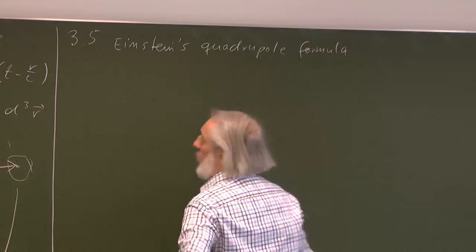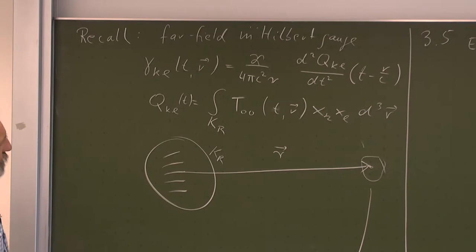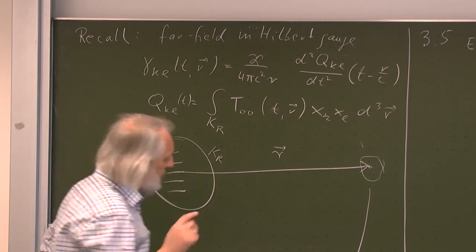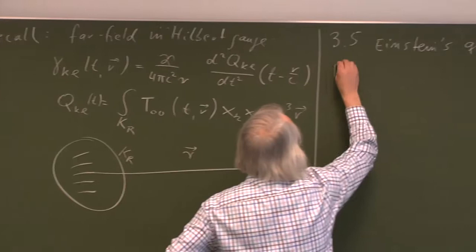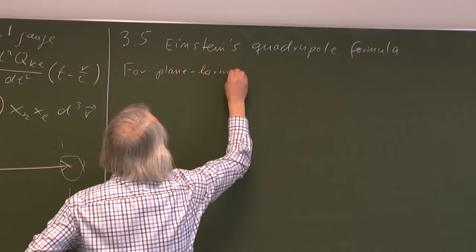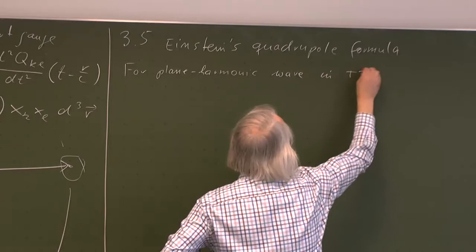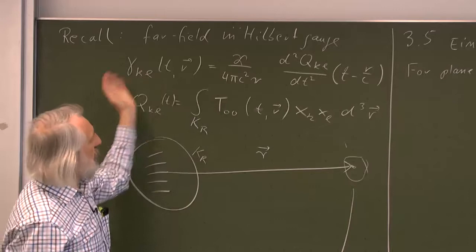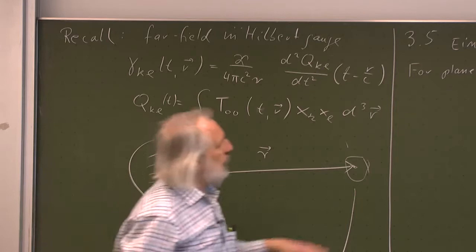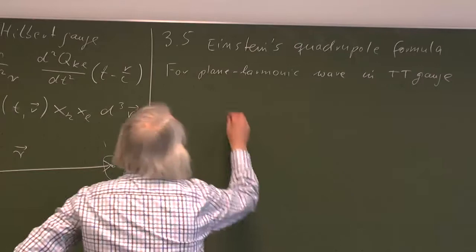So we have already talked about the energy associated with the gravitational wave, but only for a plane harmonic wave. Actually, I calculated this — this was the last thing I did before the interruption, about one and a half weeks ago — where we considered a plane harmonic wave. And here we use the TT gauge, which is more than the Hilbert gauge. This will be important in the following. Here we have the Hilbert gauge, but we didn't impose any additional gauge condition. Actually, we couldn't — in this general setting, you cannot impose something like a TT gauge. It just doesn't work.